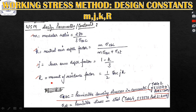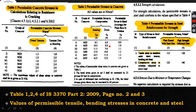The tables of IS 3370 Part 2 are given on pages 2 and 3. Table 1 is for sigma_ct, which is the permissible concrete stress in direct tension and tension due to bending. For different grades of concrete, different values of sigma_ct are given.